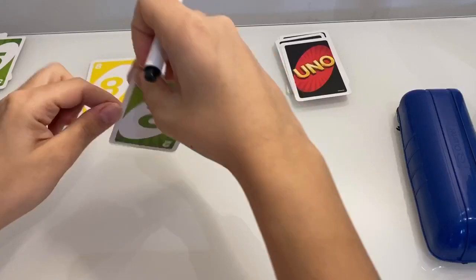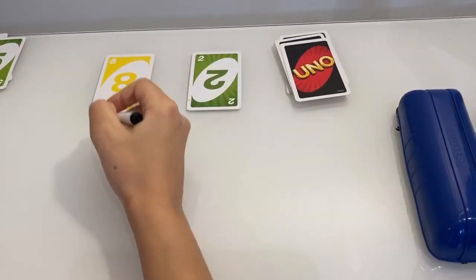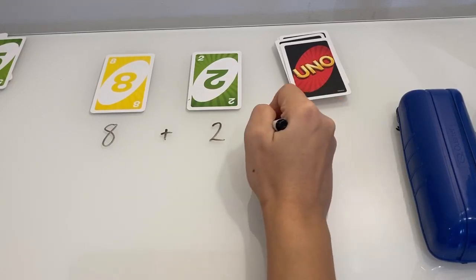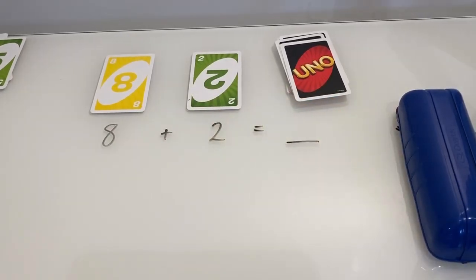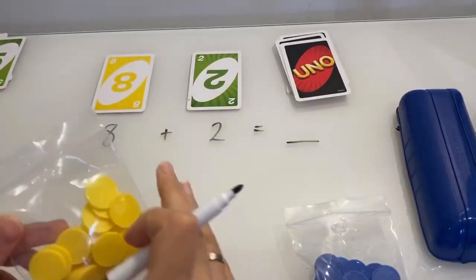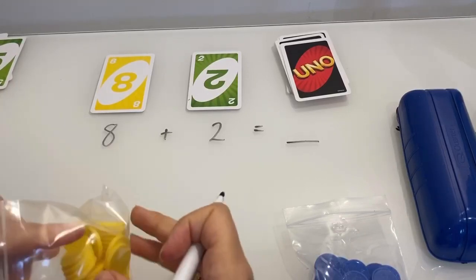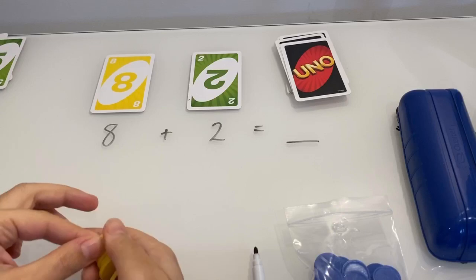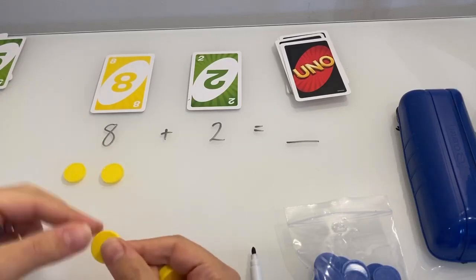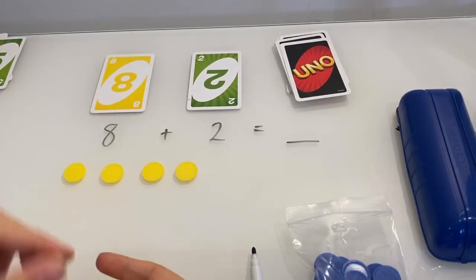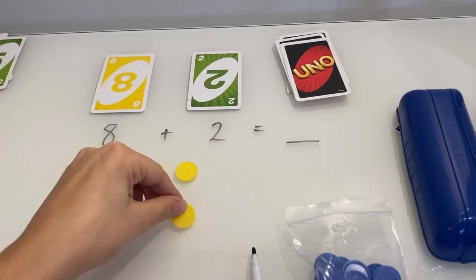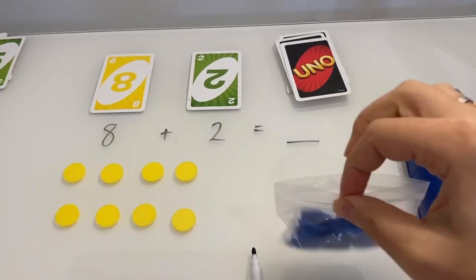Okay, now let's flip two more cards: eight and two. So eight plus two equals something. Now I've got some counters here that I might use. Eight, so count out eight counters: one, two, three, four, five, six, seven, eight, and two more.